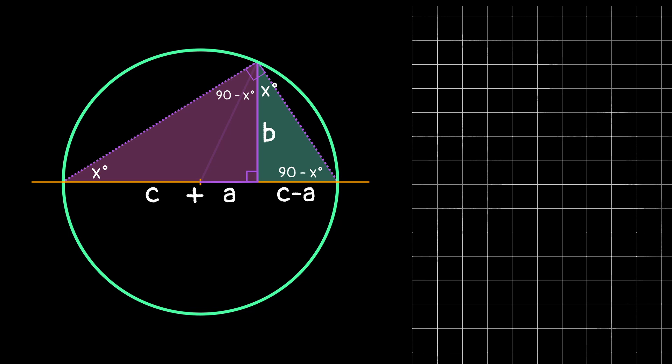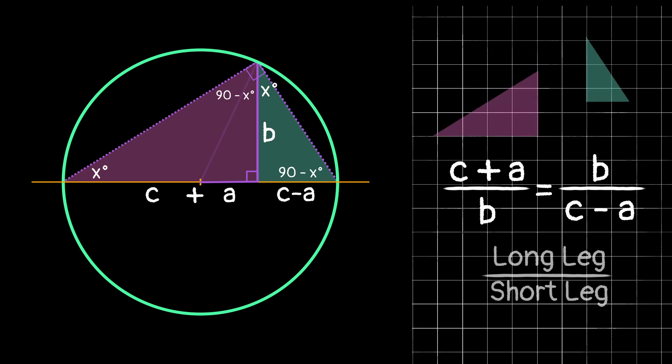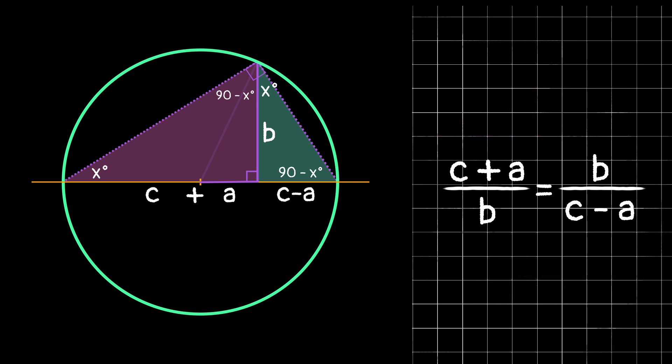So in this case, we could set up a proportion of the corresponding sides. So in our case, this might look like c plus a over b equals b over c minus a. So the left side is taking the two legs of our bigger triangle, and the right side is taking the two legs of the smaller right triangle. So now we can do some algebra and see where this gets us.